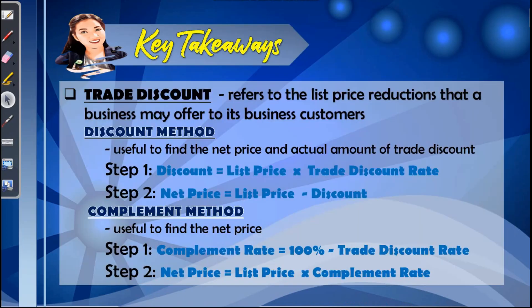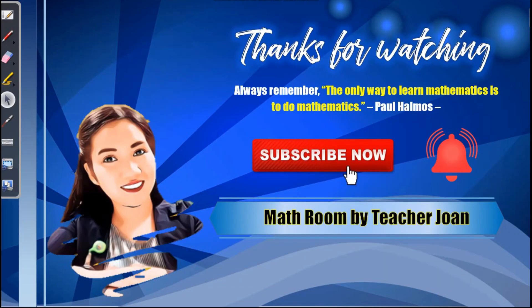Here are the key takeaways for this topic. Trade discount refers to the list price reductions that a business may offer to its business customers. There are two methods we can use: the discount method, which is useful to find the net price and the actual amount of trade discount, and the complement method, which is useful to find the net price. I hope you have learned a lot. Please continue to subscribe to my YouTube channel, watch all of my videos, put some comments, and share it with your friends. Bye everyone, see you in my next video!